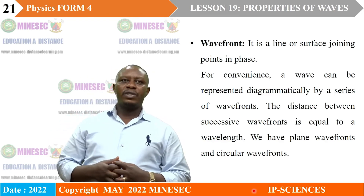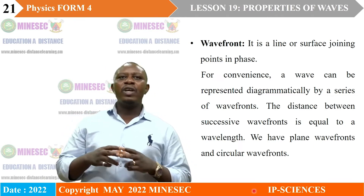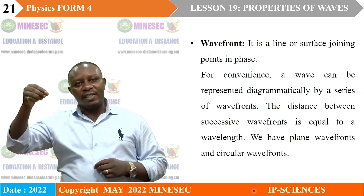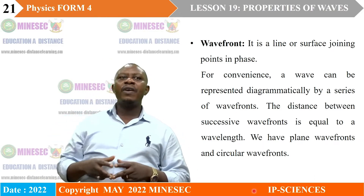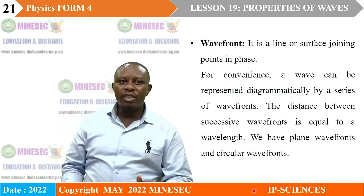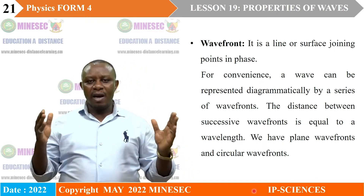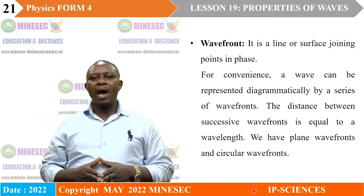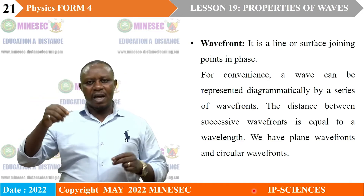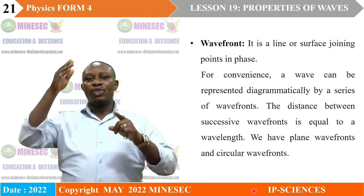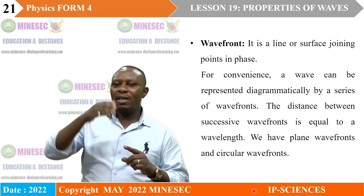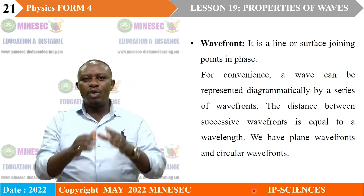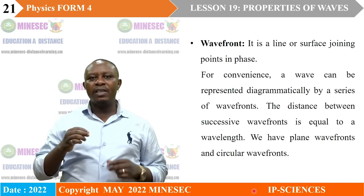What is a wave front? A wave front is a line or surface joining points in phase — a line that joins points which are in phase. For convenience, a wave can be represented diagrammatically using wave fronts. We can distinguish two types: plane wave fronts and circular wave fronts. Since particles at successive crests are in phase, the distance between one wave front and the next is equal to the wavelength of the wave.